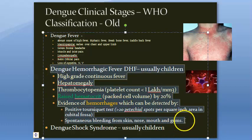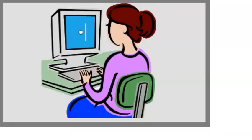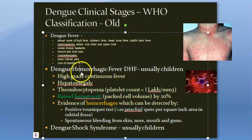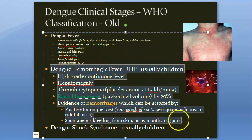To summarize Dengue Hemorrhagic Fever: high-grade continuous fever, hepatomegaly, thrombocytopenia with decreased platelet count, raised packed cell volume, hemorrhage detected by positive tourniquet test, and spontaneous bleeding anywhere. Dengue is classified under the hemorrhagic group of viruses, so DHF is an important exam topic.